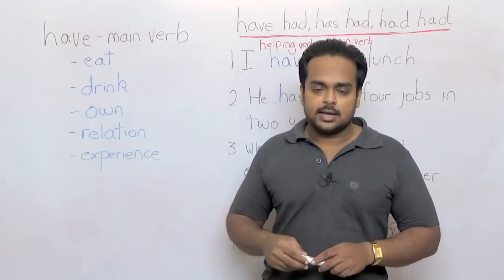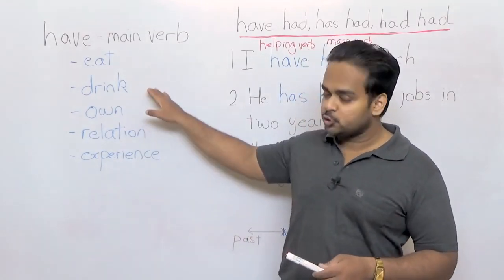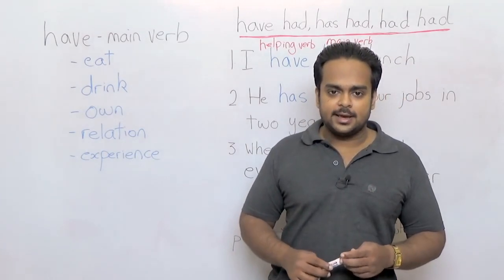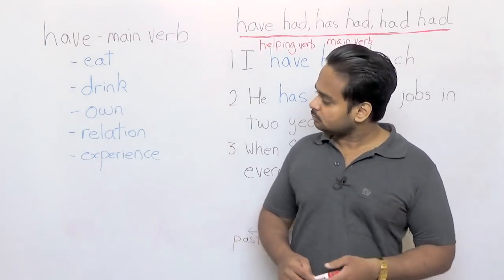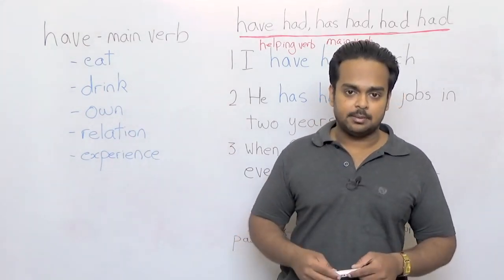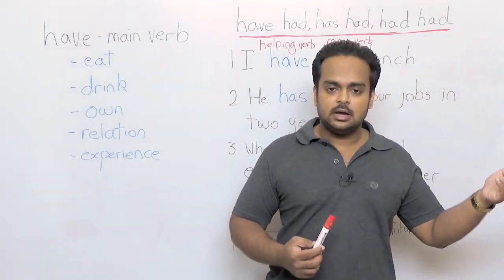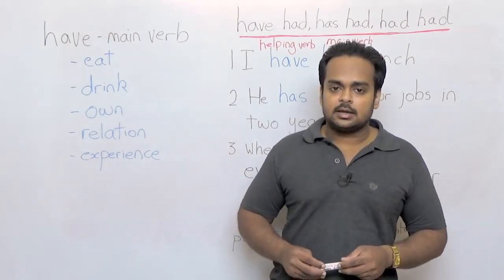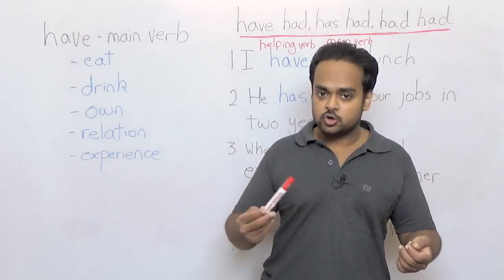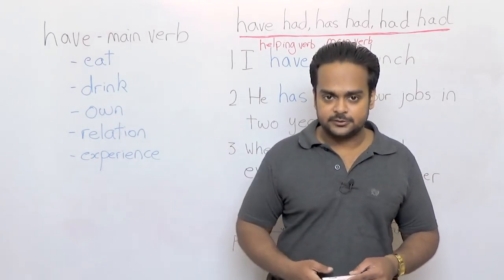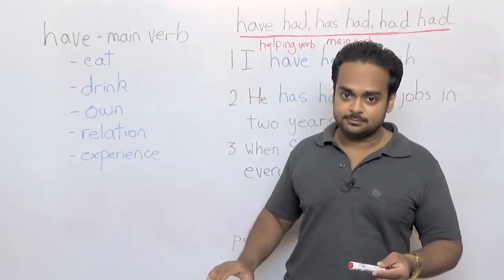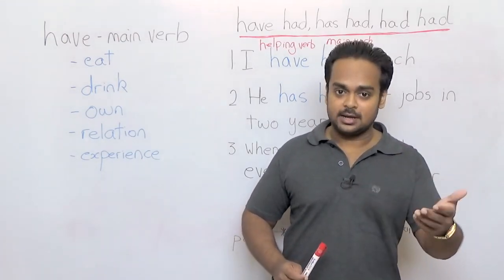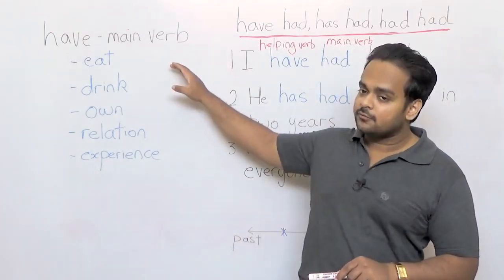When we use have as the main verb in a sentence, it could mean a number of different things. It could mean to eat, like when we talk about having breakfast or having dinner. Or it could mean to have a drink, which means just to drink something. Or we could be talking about owning something. Like when I say, I have a car, I mean that I own a car. Or it could show some relationship between people. I have a sister, that shows a brother-sister relationship. Or it could talk about some kind of experience. Like if I said, I had difficulty or I had trouble finding the place. That means it was difficult for me to find the place.